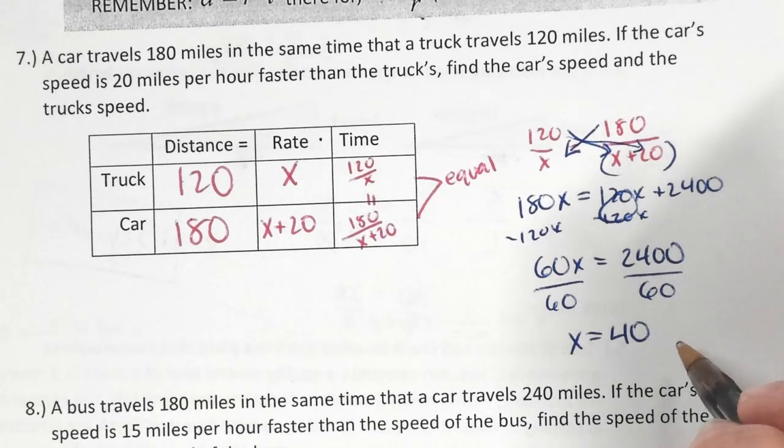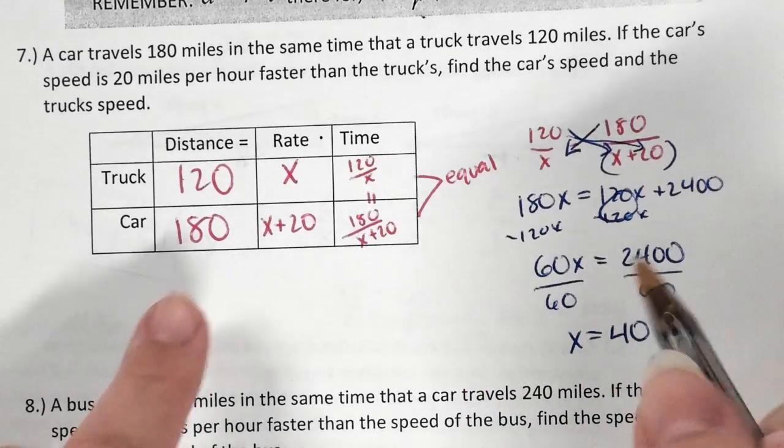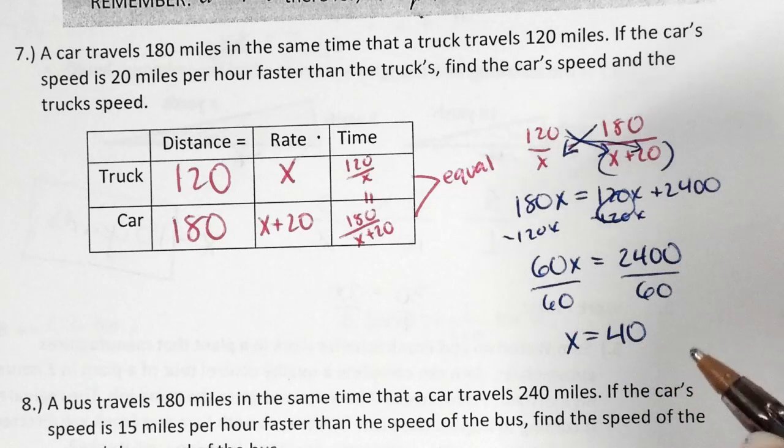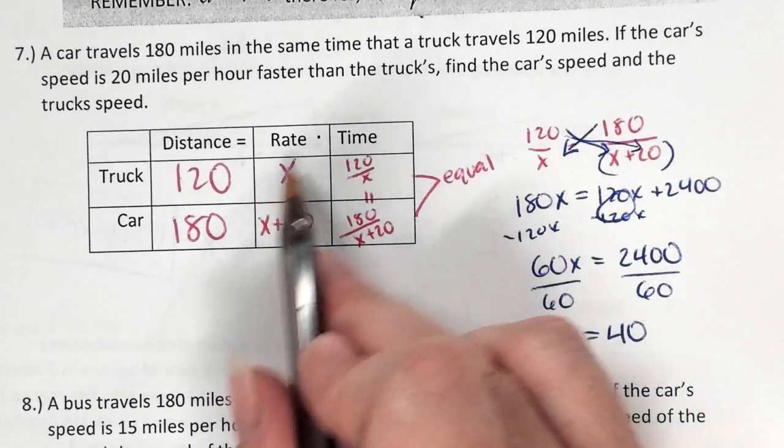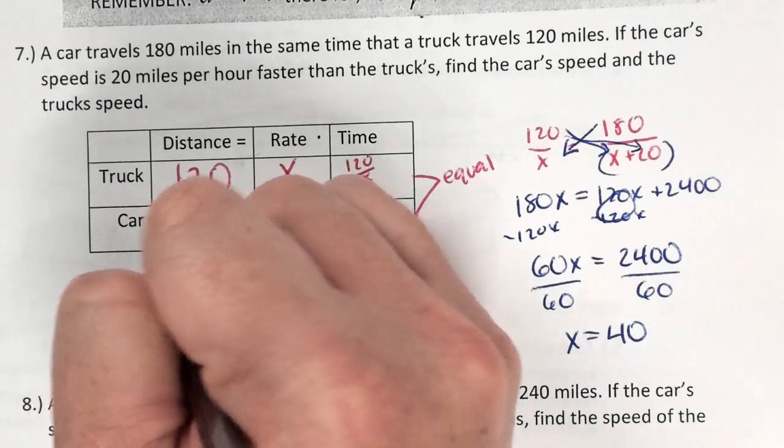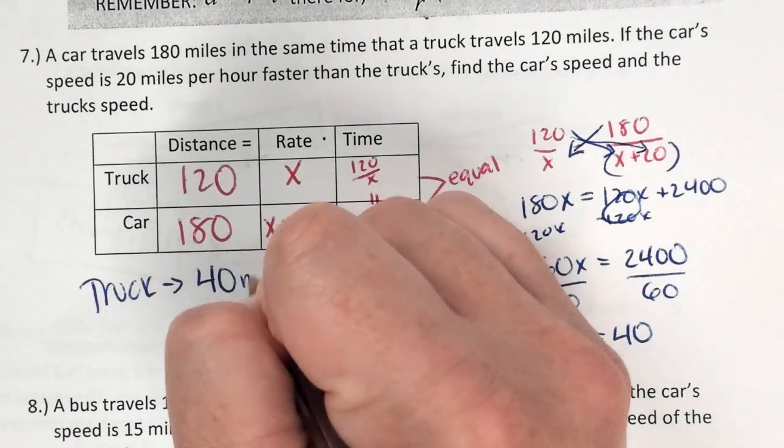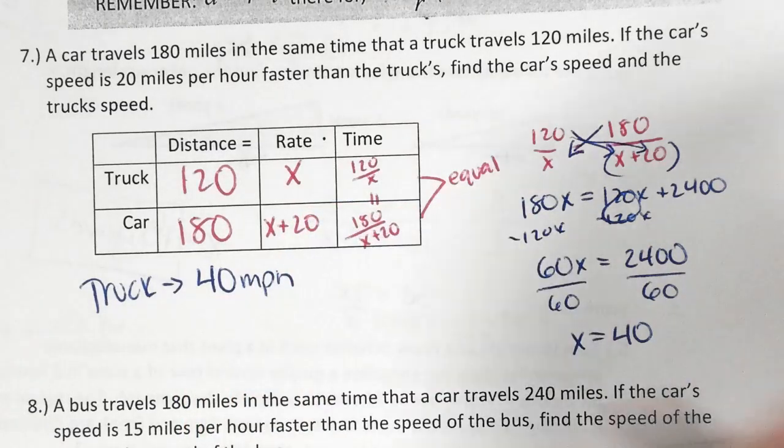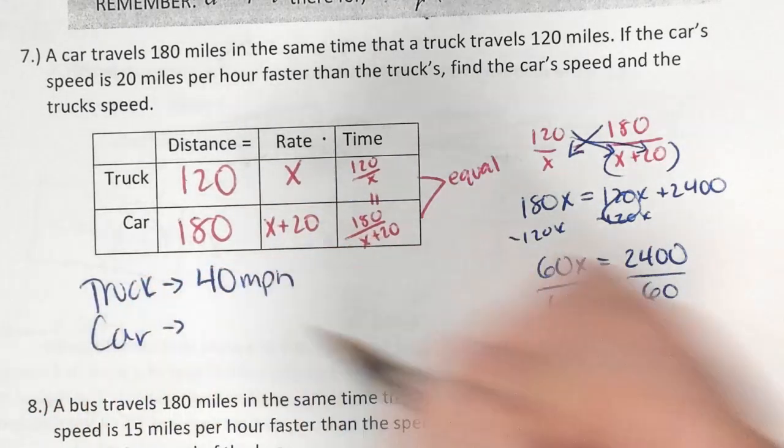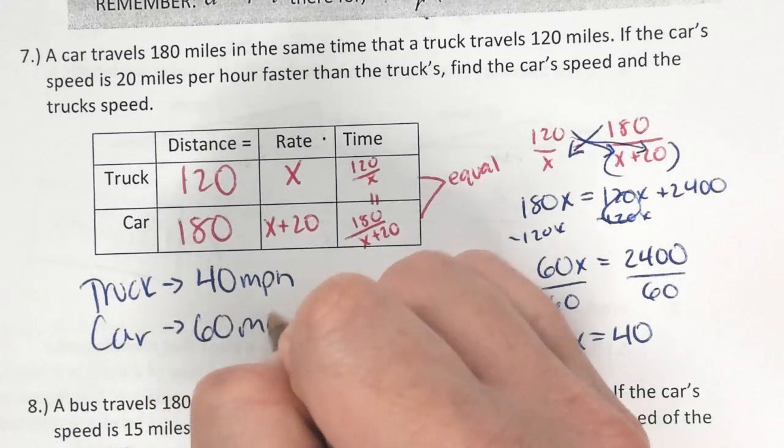Okay, well knowing that, I'm going to go back to my question. It says find the car speed and the truck speed. What represents the truck speed? X. And what does x equal? 40. So we know that the truck was driving how fast? 40 what? Miles per hour. And the car? 60. 20 more.